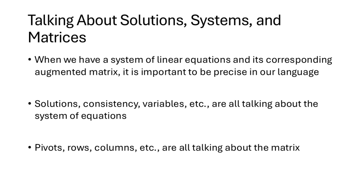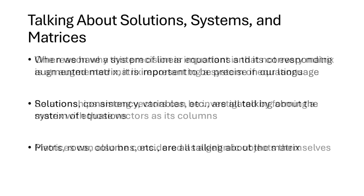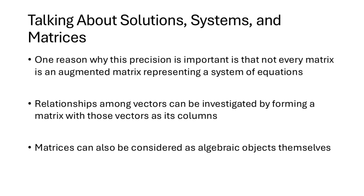Before we get into the topic of this video, I want to say a few words about how we talk about solutions, systems, and matrices. It's important to be precise in our language. When we use words like solution, consistent, variable, and so on, all of those words are talking about a system of equations. However, when we use words like pivots, rows, columns, and so on, those are talking about the matrix. This distinction is important because not every matrix is an augmented matrix representing a system of equations. Relationships among vectors can be investigated by forming a matrix with those vectors as its columns, and matrices can also be considered as algebraic objects themselves.